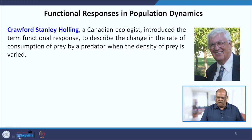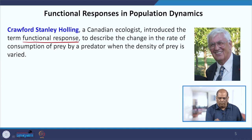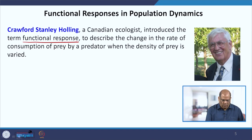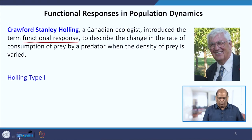Crawford Stanley Holling is a Canadian ecologist. He introduced the term called functional response, basically to describe the change in the rate of consumption of prey by a predator when the density of prey is varied. The two types of functions we will discuss here are Holling Type 1 and Holling Type 2.